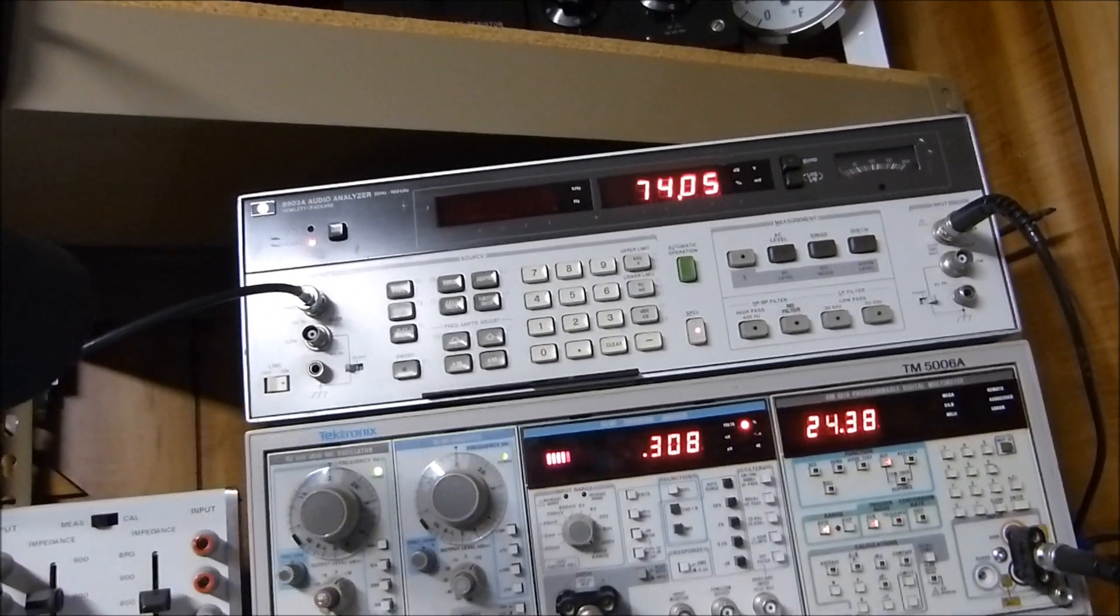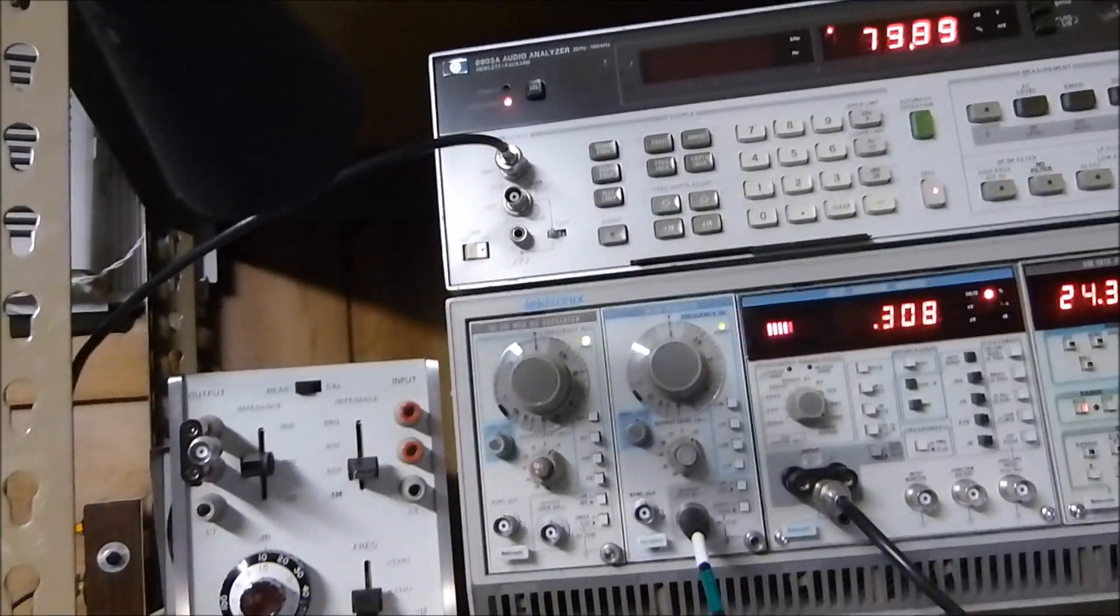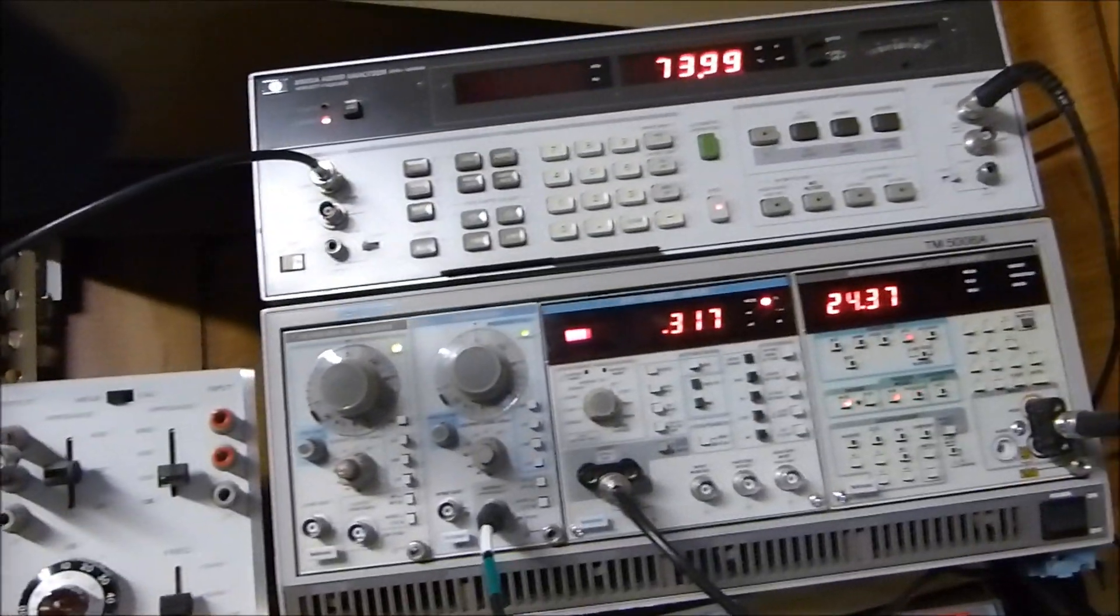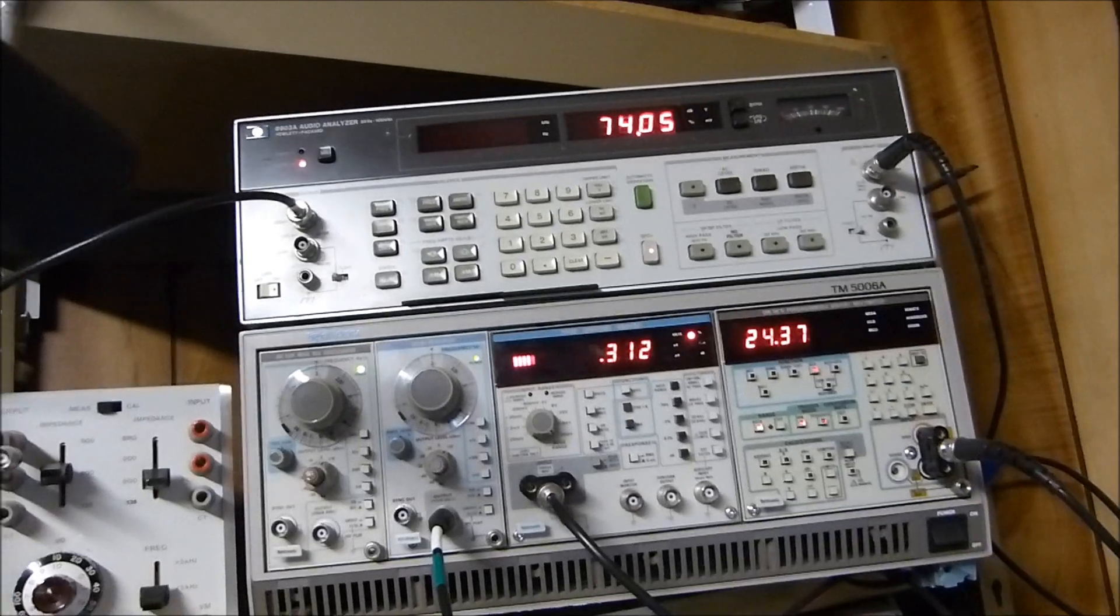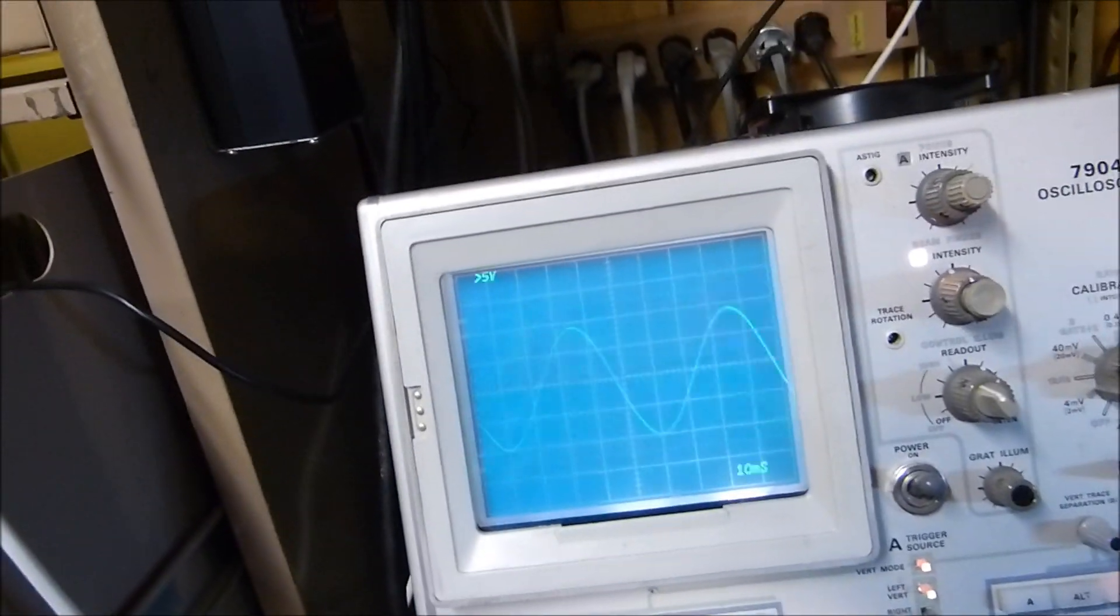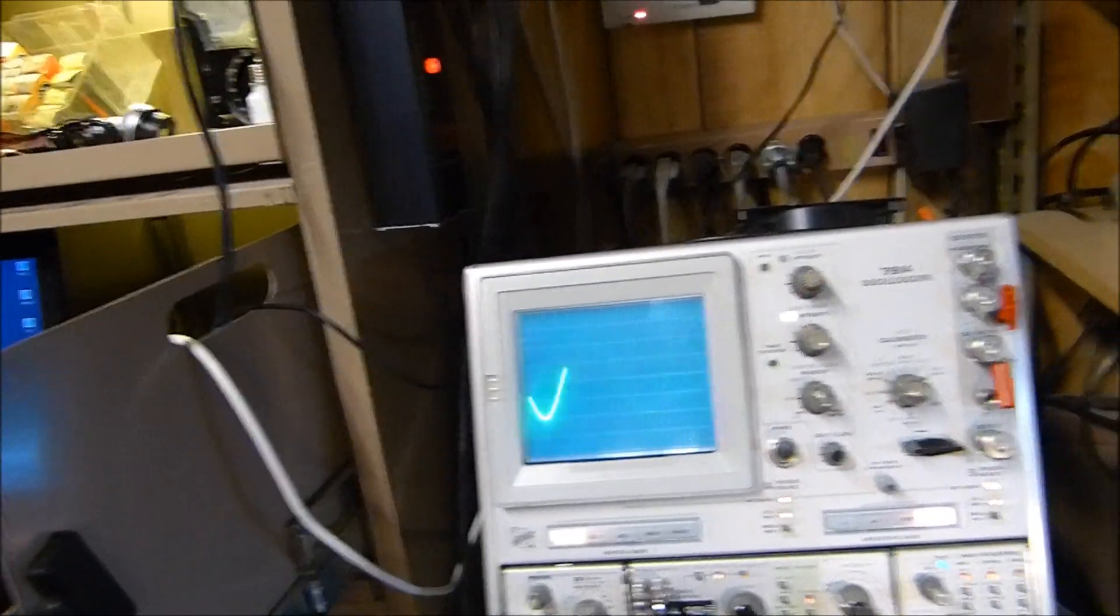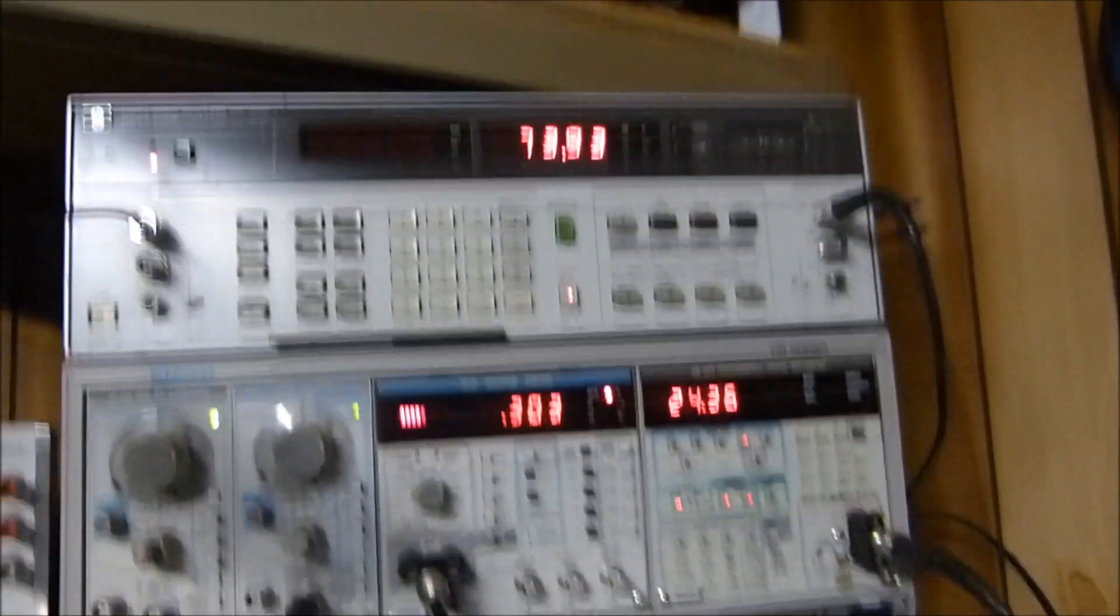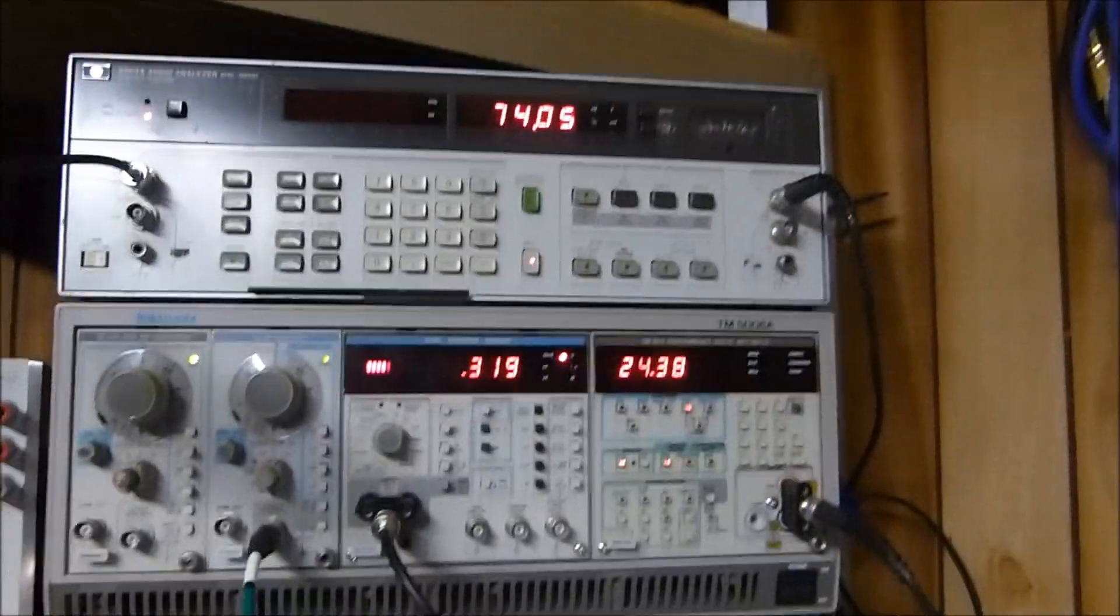That's without changing the level, and the level of the oscillator is quite good. It'll do 20 to 20 kilohertz at 0.3 or 0.4% THD. Actually performs very well. Now measure its signal-to-noise ratio. Set that up.